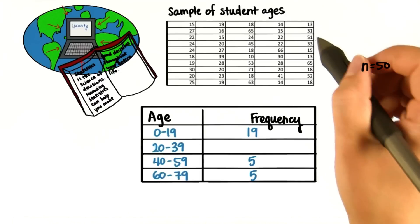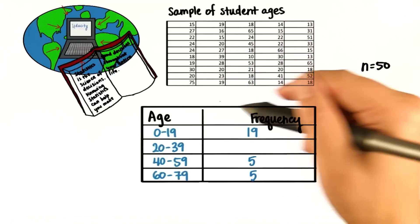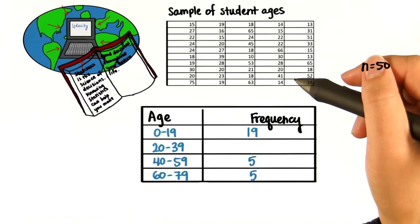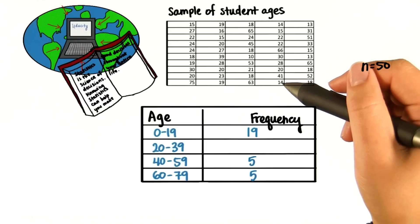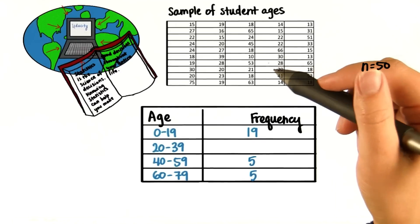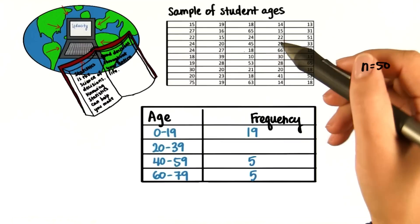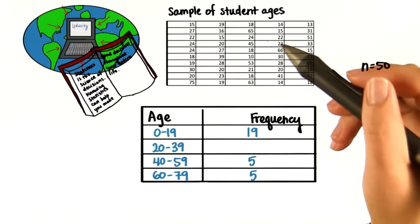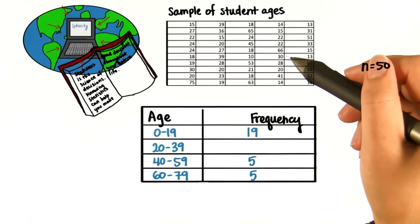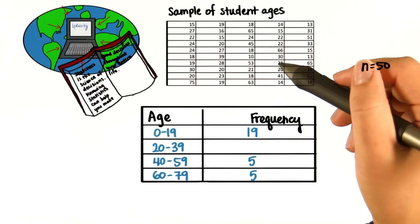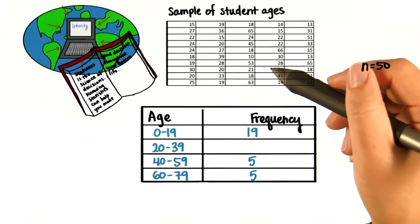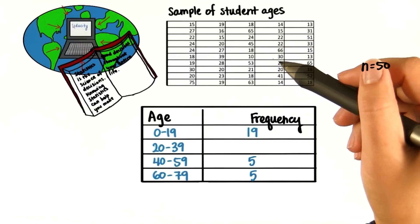One way to do it would be to look up at the original table and count the number of students who are either 20, 21, 22, all the way to 39. But that would be really time consuming.